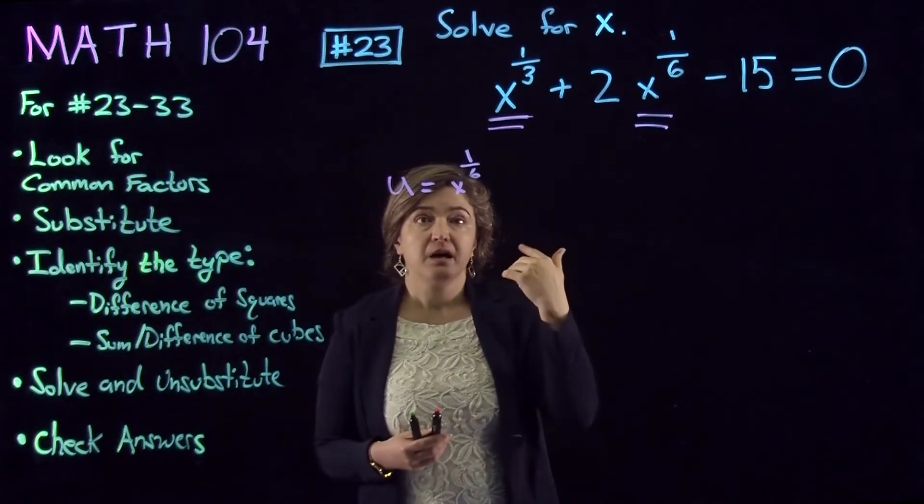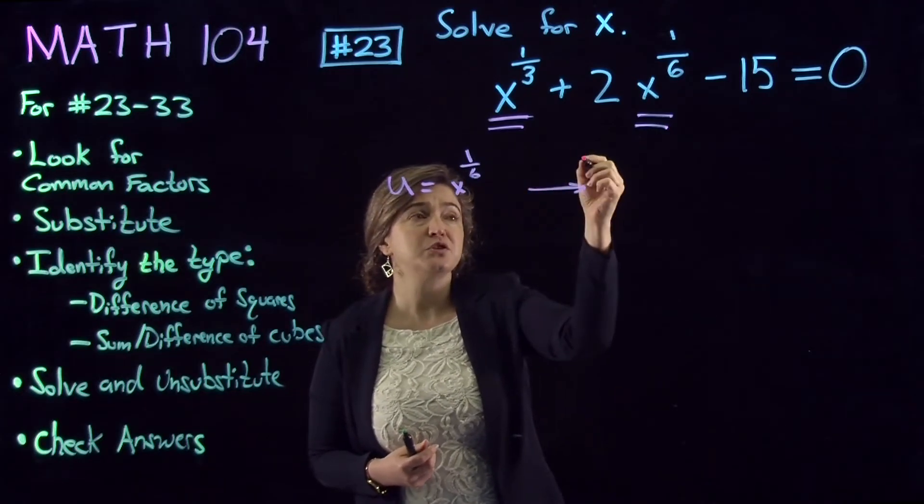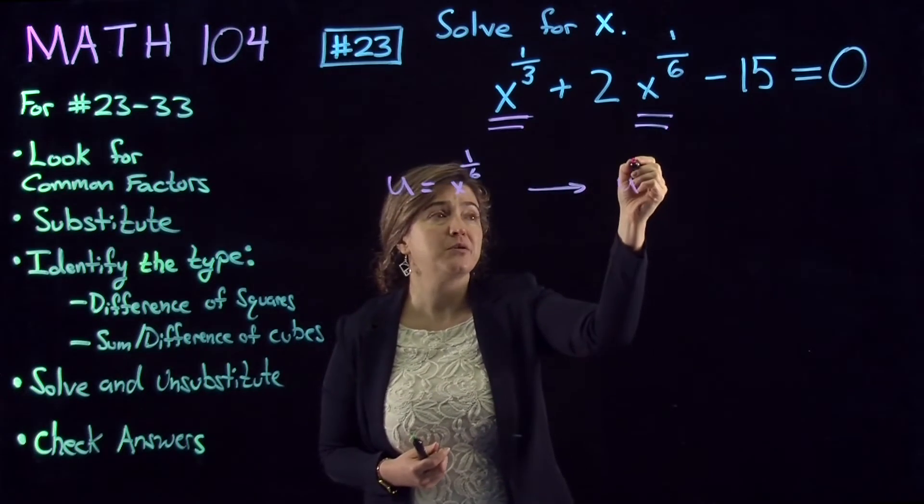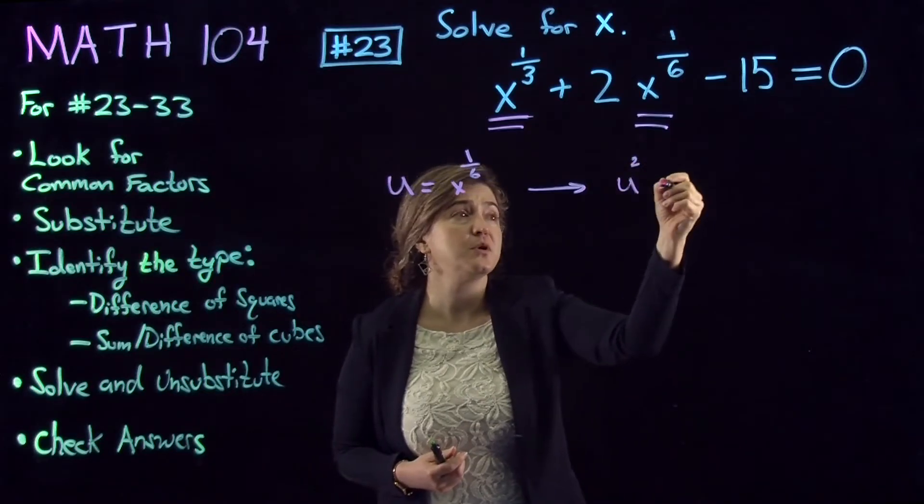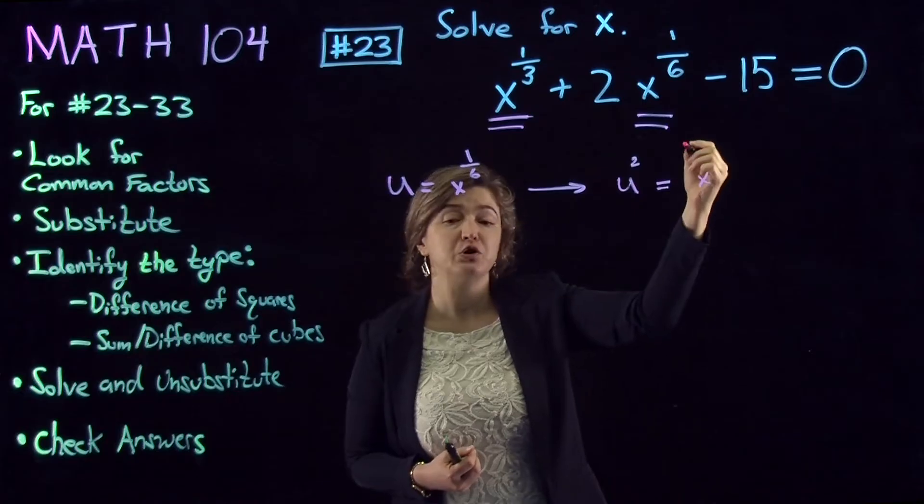We get u to the power two is equal to x to the power one-sixth to the power two, which is x to the power two-sixths, which is x to the power one-third.